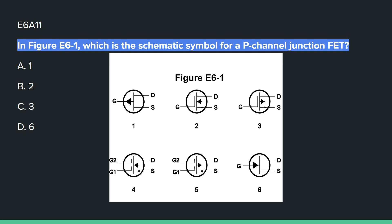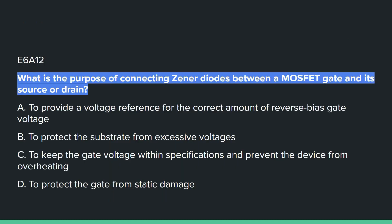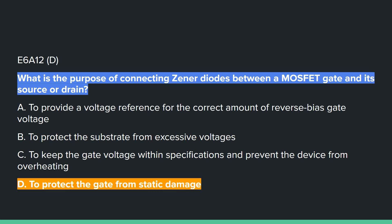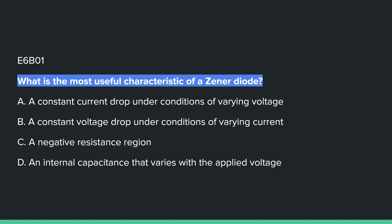E6A11: In figure E6-1, which is the schematic symbol for a P-channel junction FET? That answer is A, which is number 1. E6A12: What is the purpose of connecting zener diodes between a MOSFET gate and its source or drain? D, to protect the gate from static damage. E6B covers diodes.